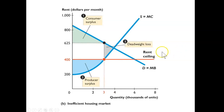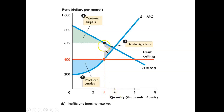But if we impose a price ceiling, we are going to create a deadweight loss because the quantity bought and sold will be less than the equilibrium, and so this part of the consumer plus the producer surplus will be lost.